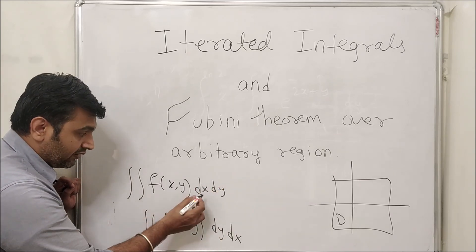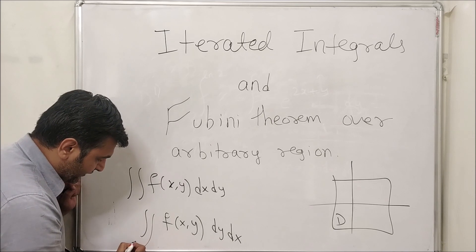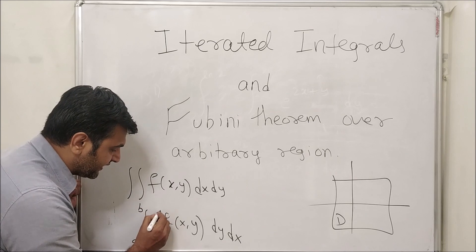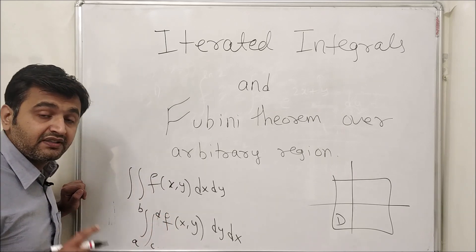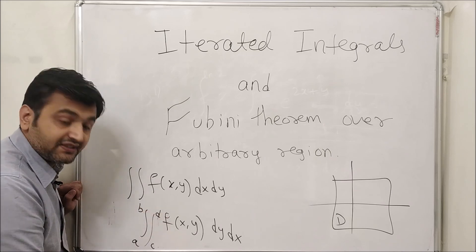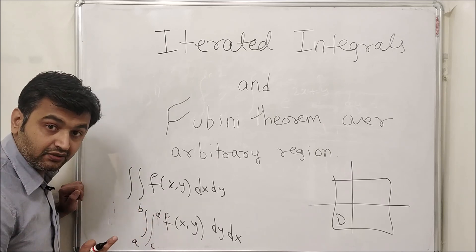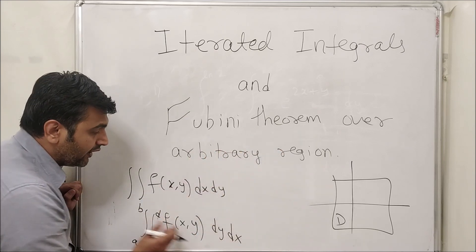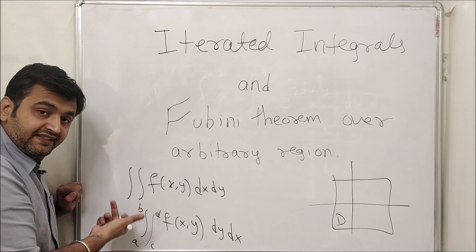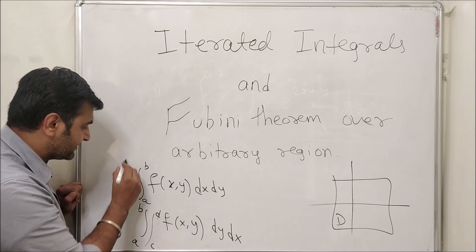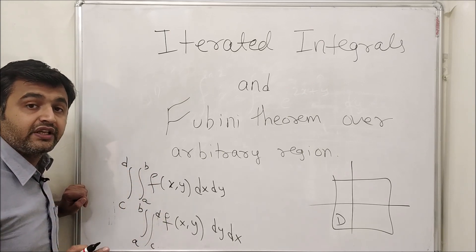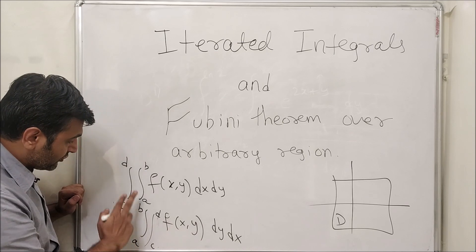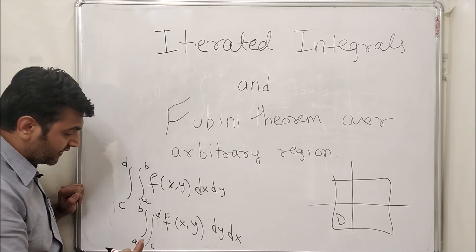For a rectangle, the limits for dy dx — say x goes from a to b and y goes from c to d — are all numbers. That's what you observed in my previous examples: all the limits were numbers, no variables. Because it's a rectangle bounded by horizontal and vertical lines, you have numbers. When you interchange the order, this simply gets flipped: a to b and c to d swap positions.